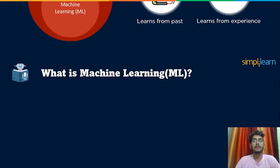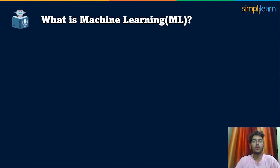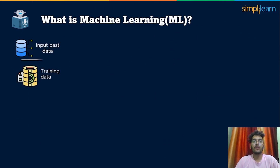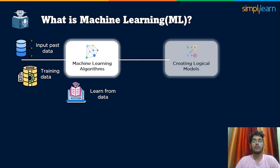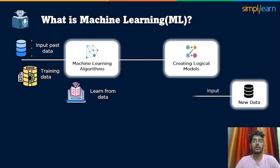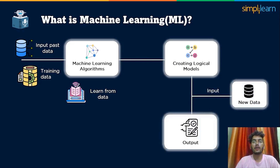Let's understand the basic idea of how machine learning works. Firstly, you have to input the past data or training data into the machine learning model. After that, the machine learning model learns from the data and creates logical models. In the end, when you input new data to a machine learning model, it predicts output according to those logical models.